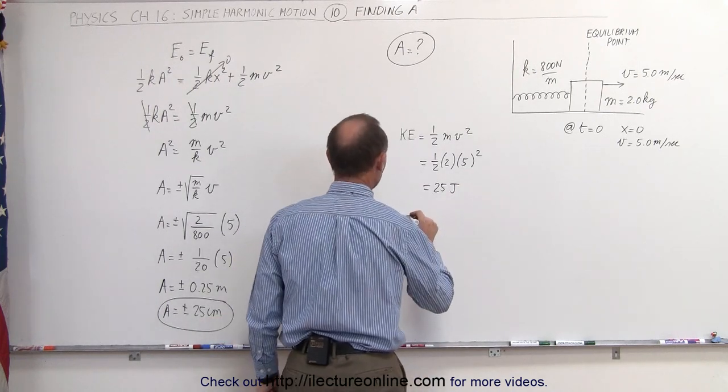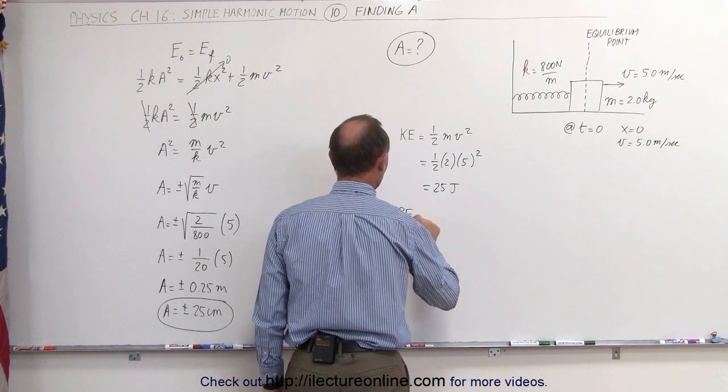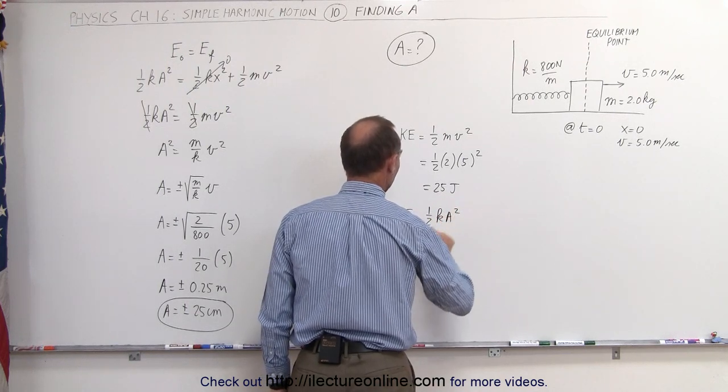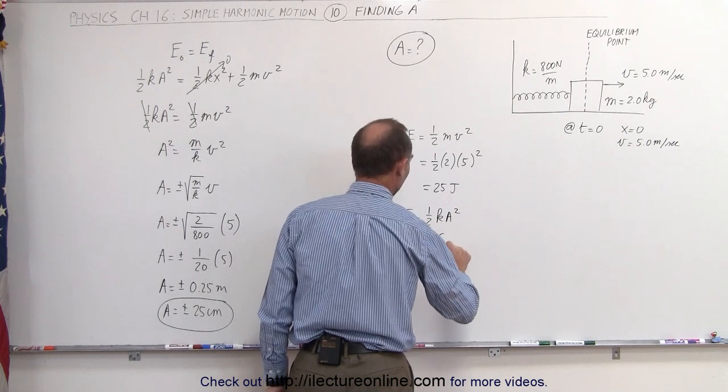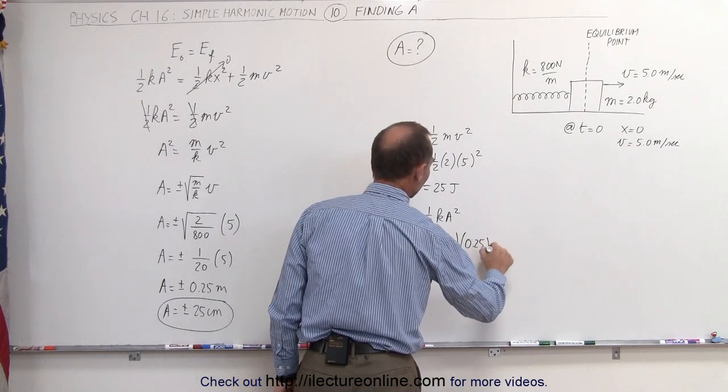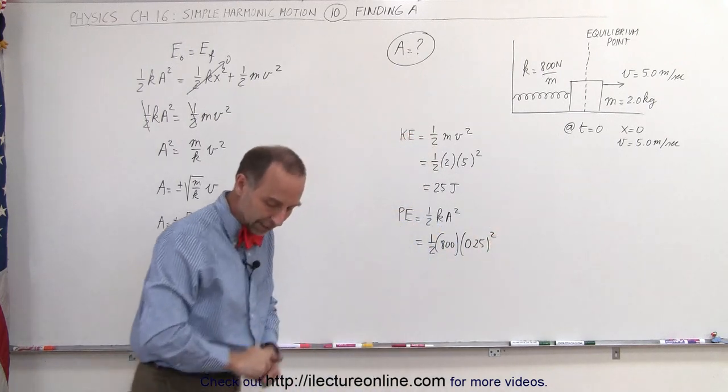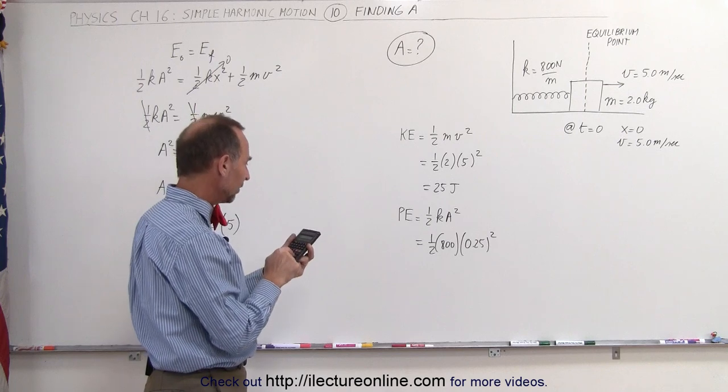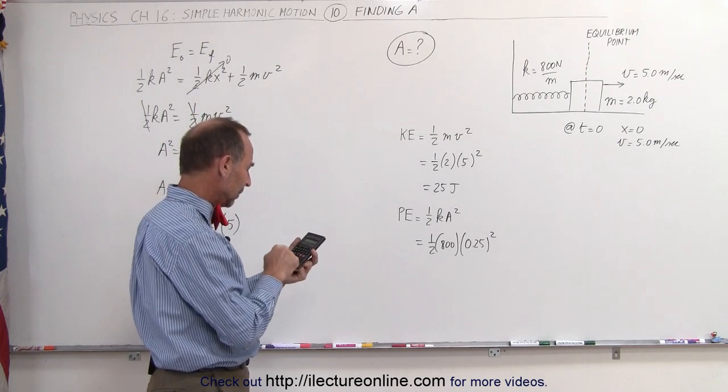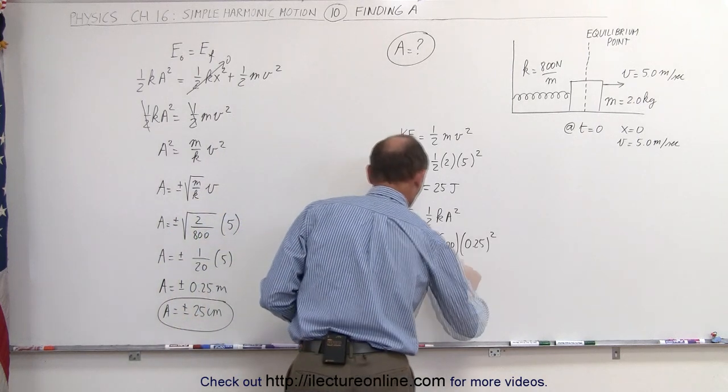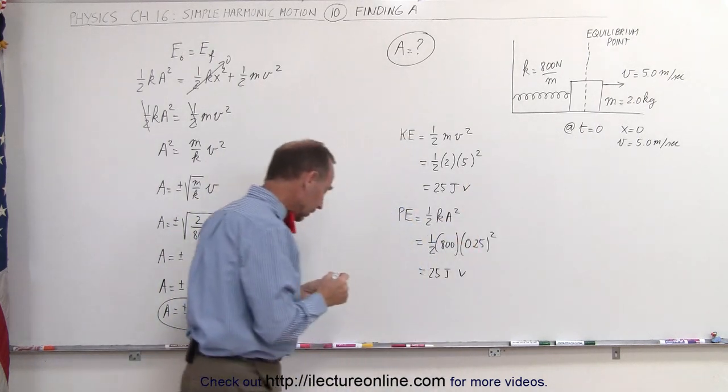Potential energy is equal to 1 half k a squared, which is equal to 1 half times 800, times a squared would be 0.25 squared. Let's see if we get the same result here. 0.25 squared times 800 divided by 2 equals 25 joules. Just to make sure that we got the right answer.